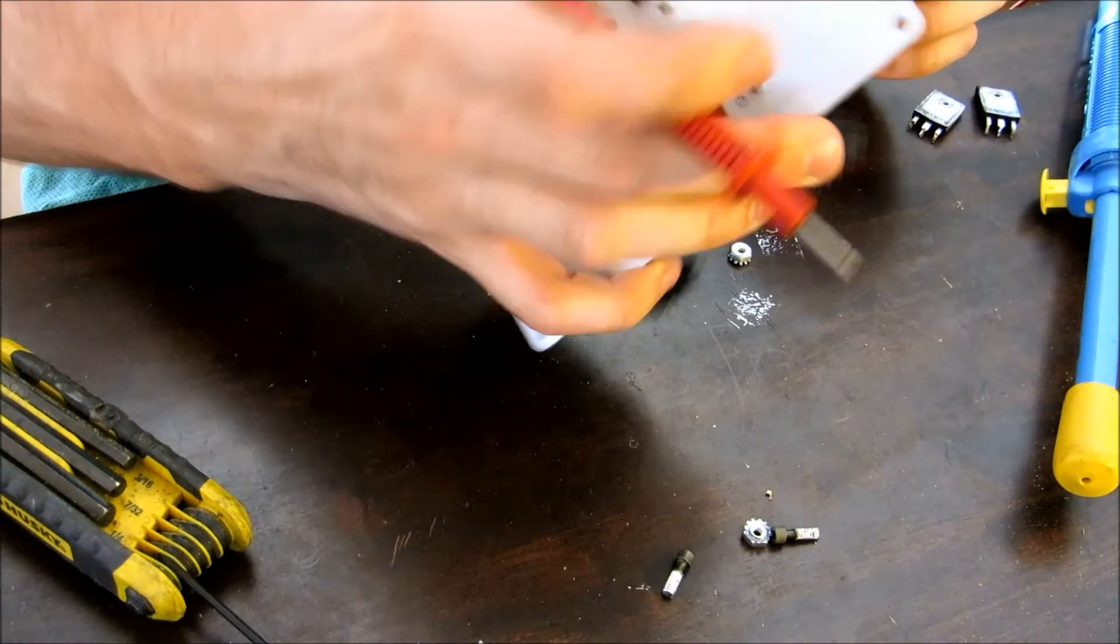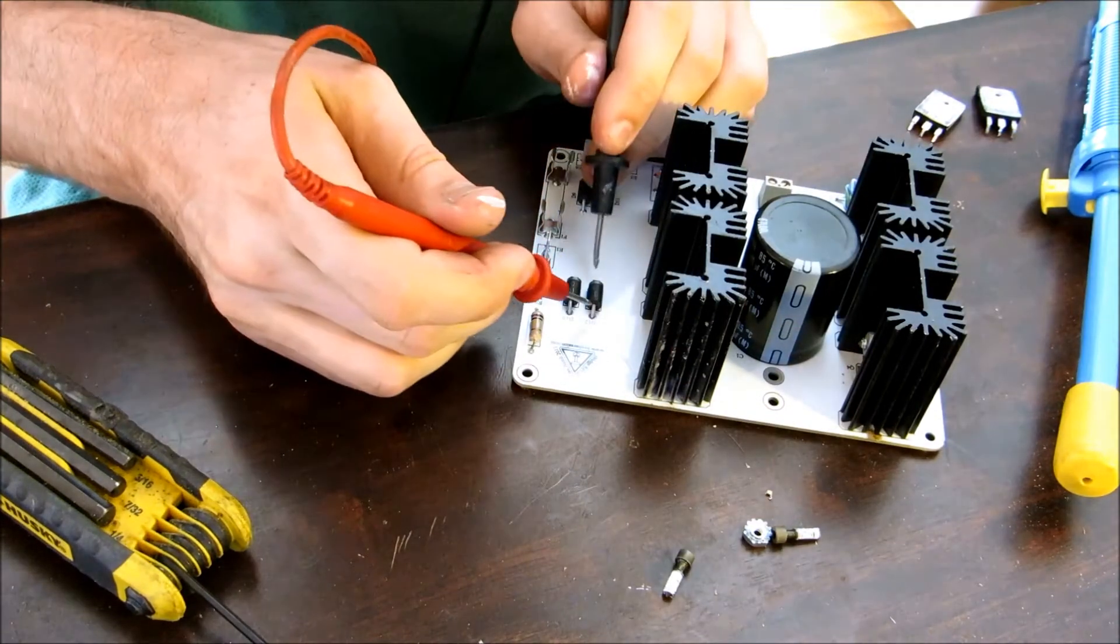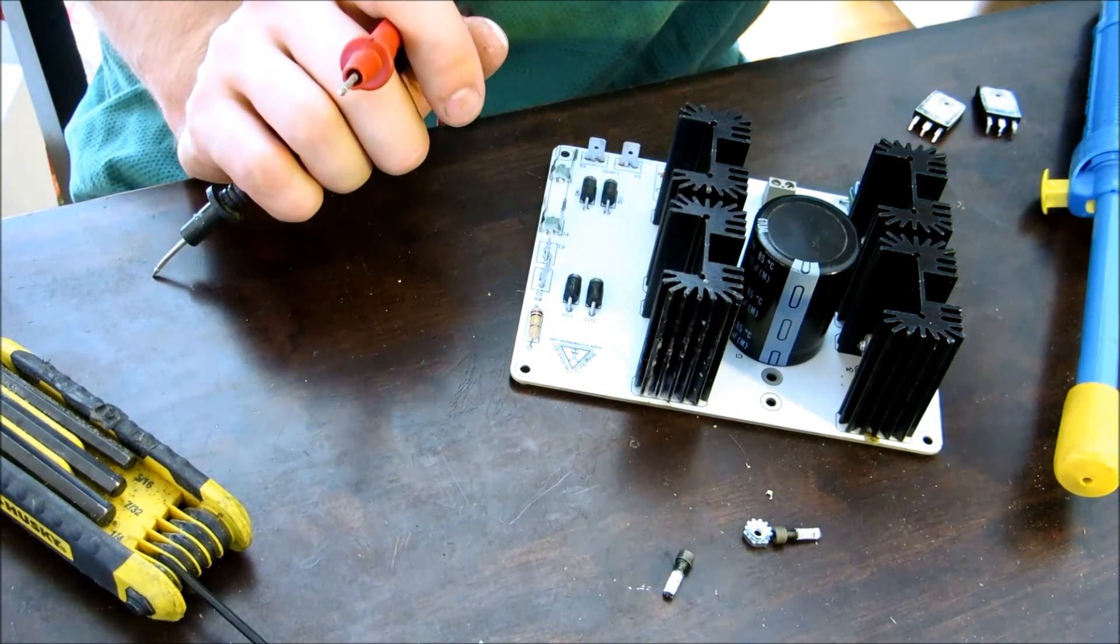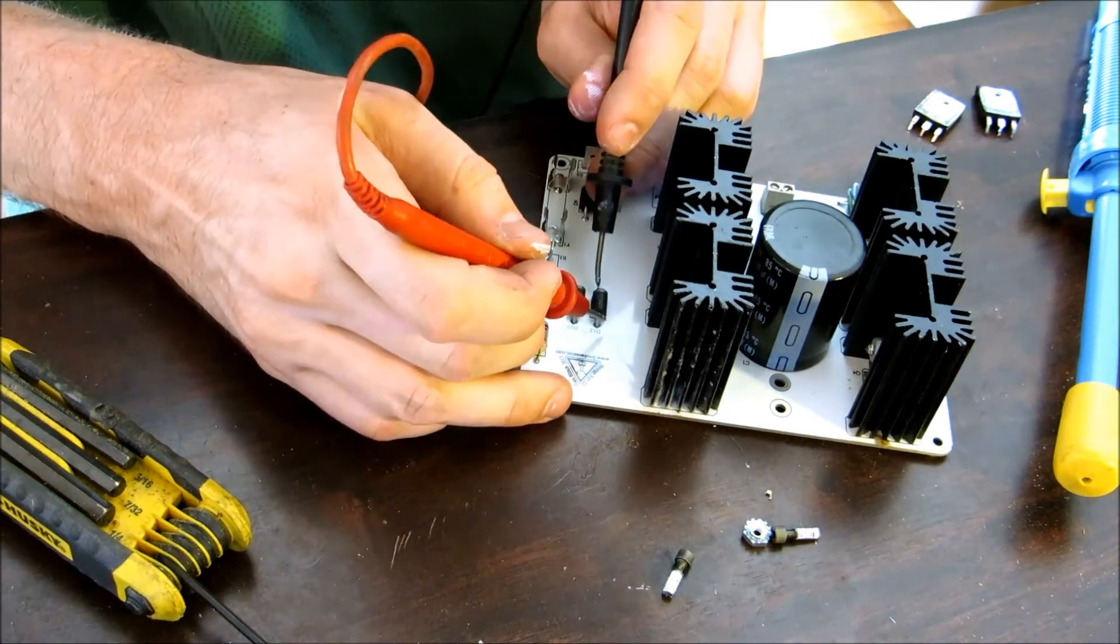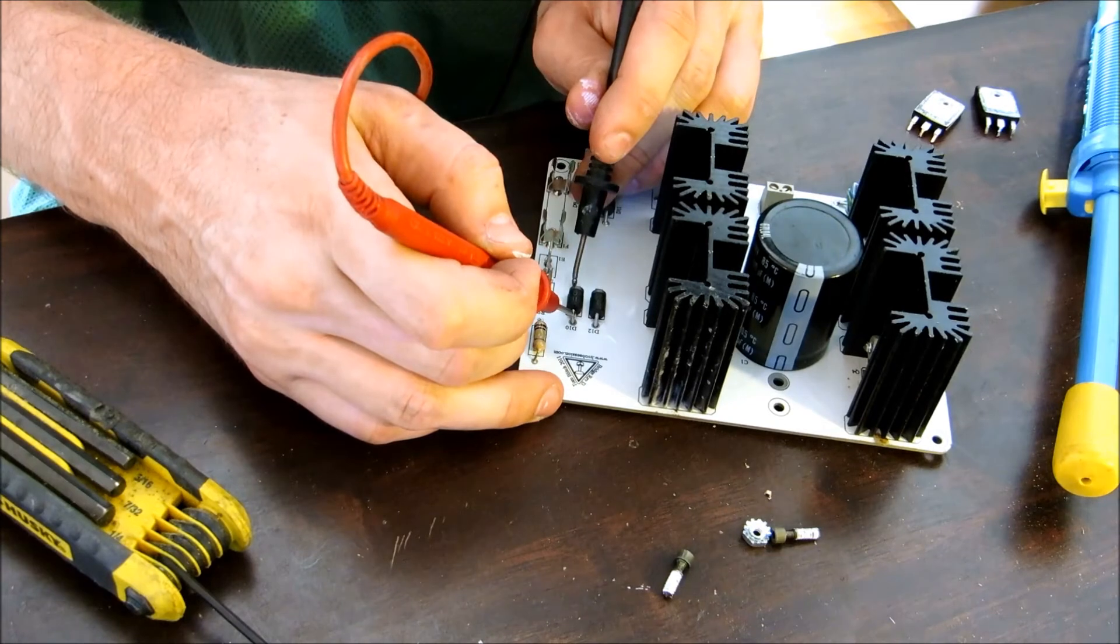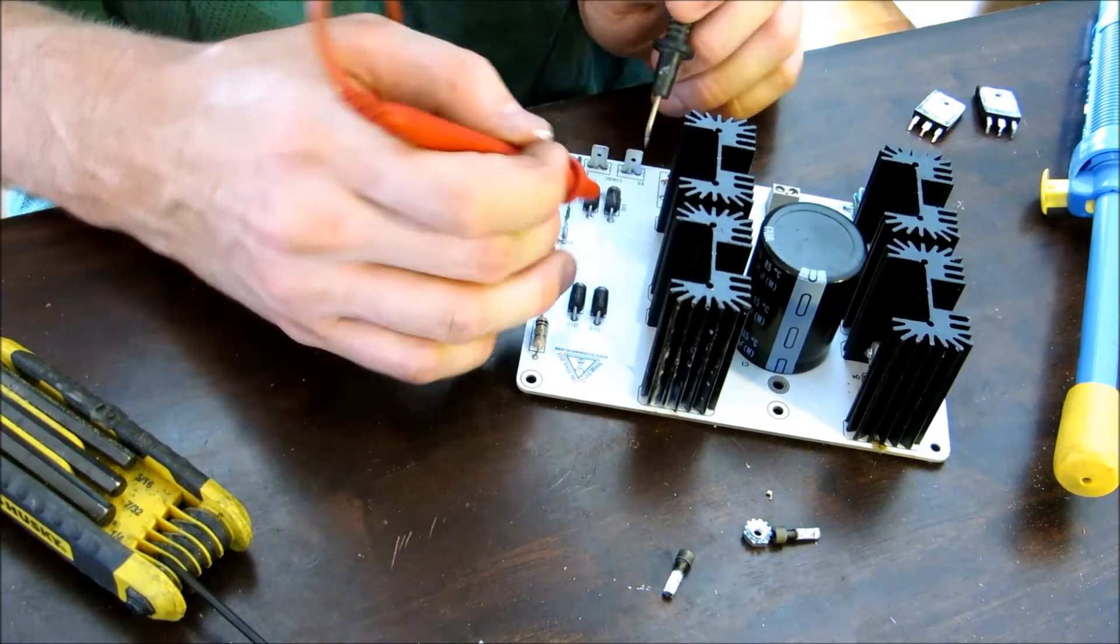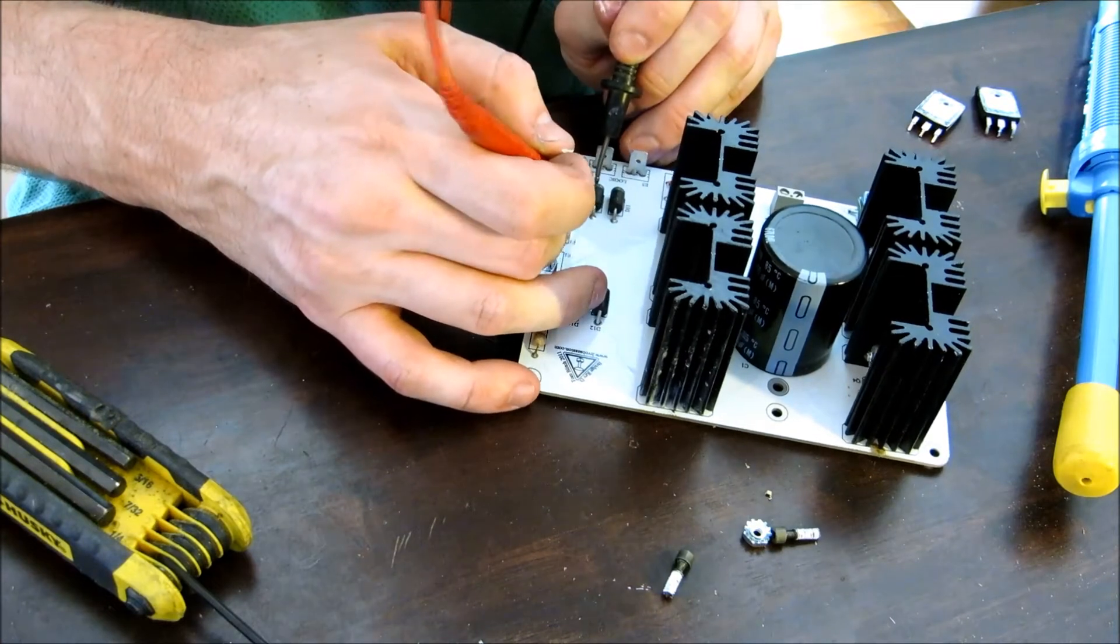So now what I usually do is, you want to check these diodes, because I've noticed that every once in a while, they fail too. You got to put this on diode mode, not ohm. And just check to make sure you got... Ooh, that one's bad actually. About 0.3, 0.4, anywhere from 0.3 to 0.7 on these.